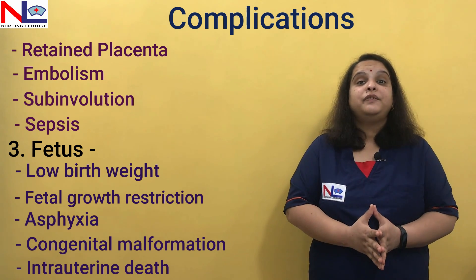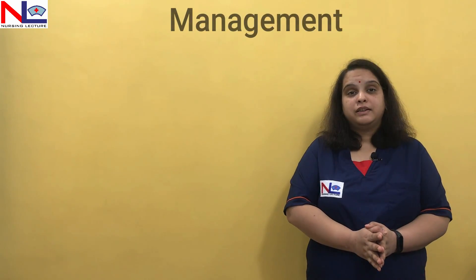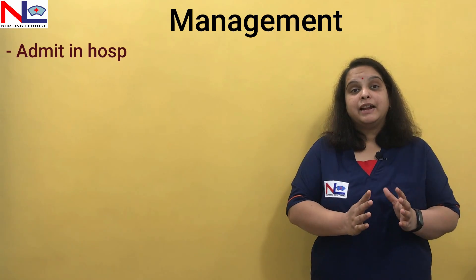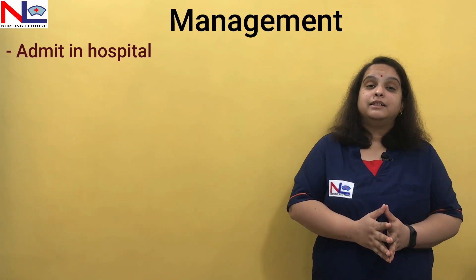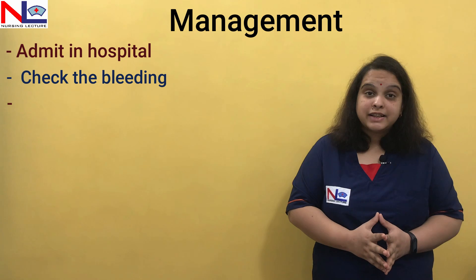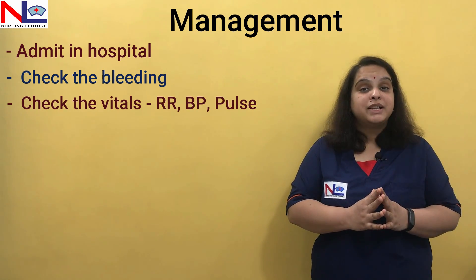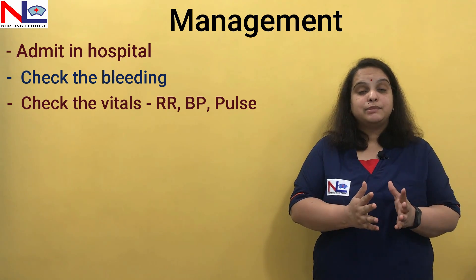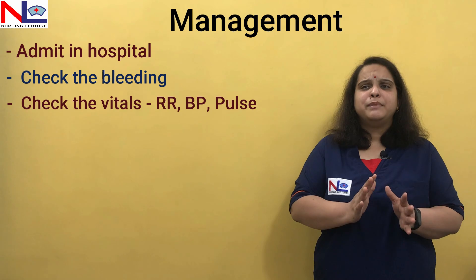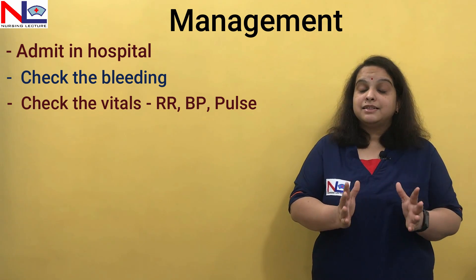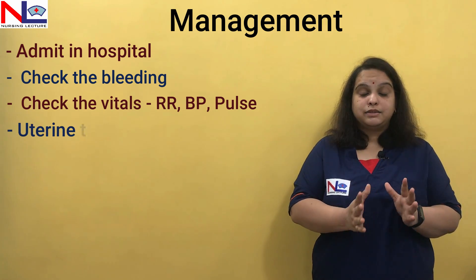Intrauterine death may occur if heavy bleeding is not controlled effectively. These are the complications associated with placenta previa that can appear in both mother and fetus. Now let's talk about management. Once the woman comes to hospital — with a history of bleeding, whether warning hemorrhage or brisk — we first admit her, ensure bed rest, note the amount of bleeding, and check vital signs to assess hemodynamic status, including respiratory rate, pulse rate, and blood pressure.